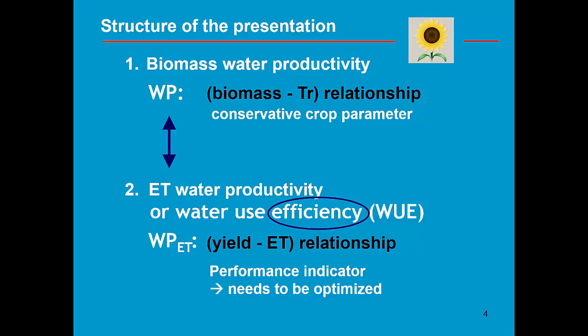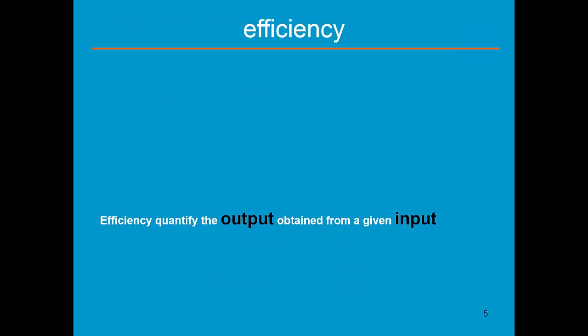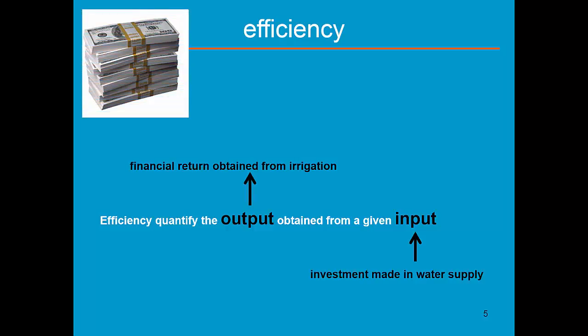It is an efficiency and an efficiency quantifies the output obtained from a given input. The input can be money, for example the investment made in water supply and then the output will be the financial return obtained from irrigation.